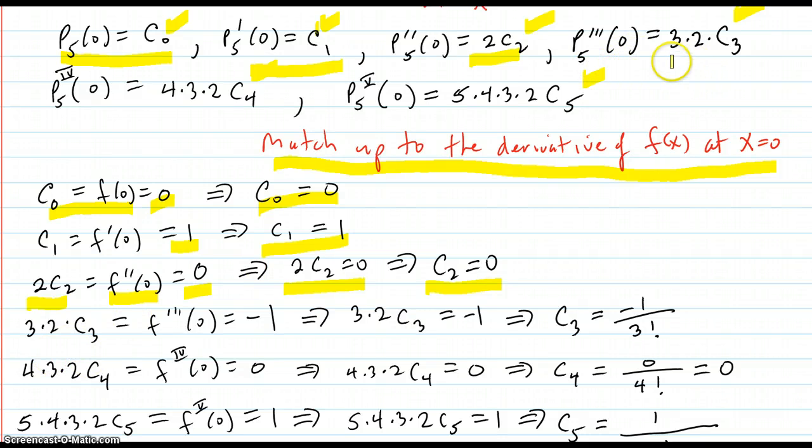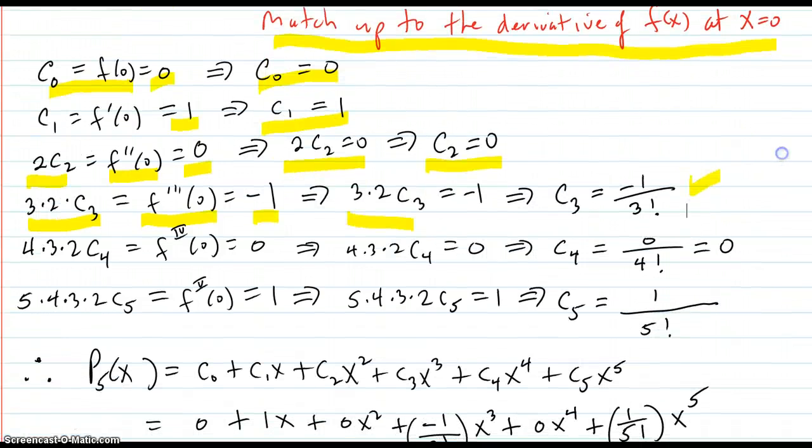p triple prime at zero is three times two times c three, which is here. And that has to match up with f triple prime at zero, which is negative one. That implies three times two times c three equals negative one. So c three equals negative one over, and I put three factorial for a pattern reason that we'll see later.